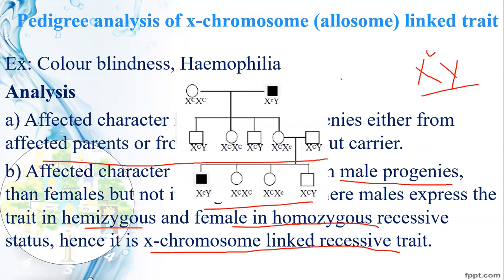For color blindness notation: capital C represents normal vision and small c represents color blind vision. Capital C is dominant and small c is recessive. In males, because they are hemizygous, the recessive small c allele is expressed directly.